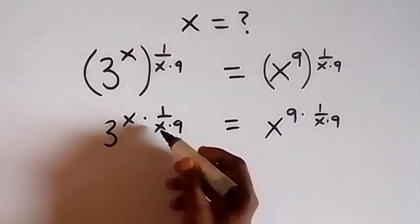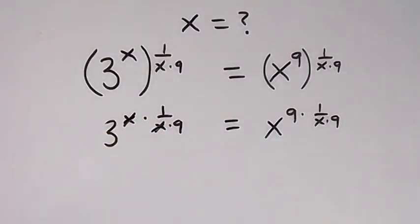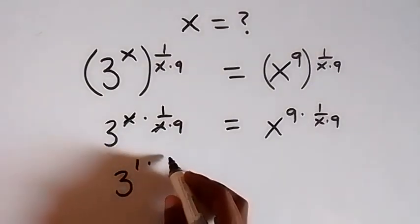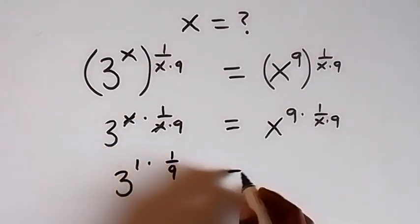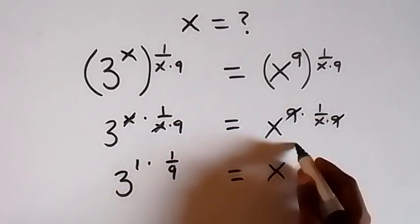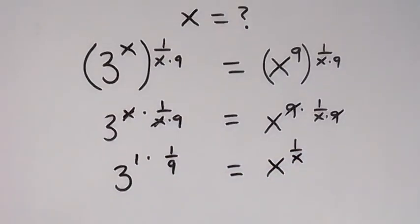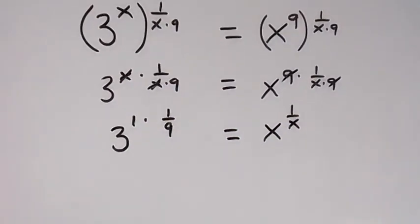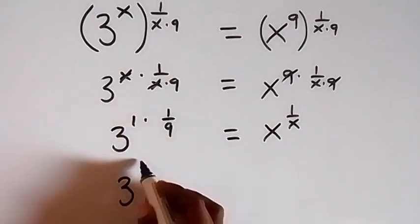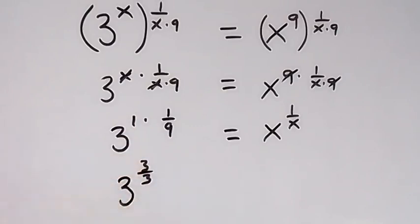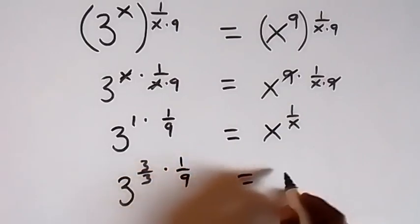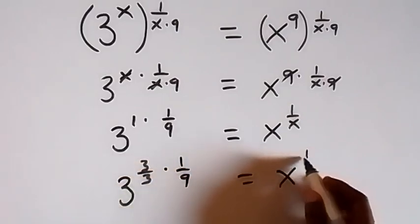From here, this x cancels out this x, then what we have left is 3 raised to power 1 times 1 over 9, which is equal to x raised to power 1 over x. From here we can write 1 as 3 over 3, that is we have 3 raised to power 3 over 3. 3 over 3 still gives us 1, then times 1 over 9, and equals to x raised to power 1 over x.